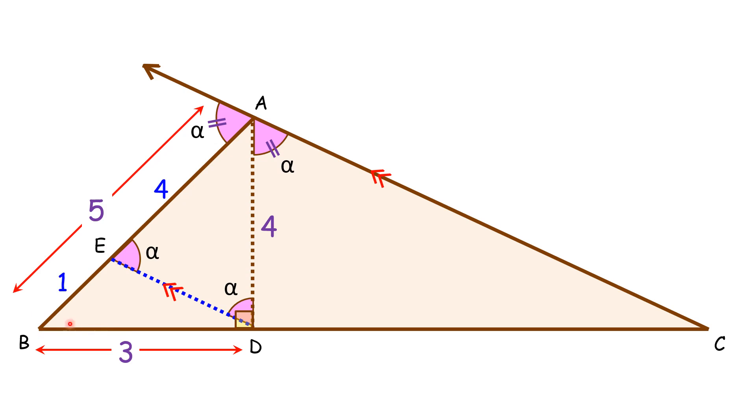Now if we consider the triangle ABC, in this full big triangle, AD is parallel to the third side AC. Thus, by Thales theorem, or basic proportionality theorem, we can say that BE upon EA will be equal to BD upon DC.